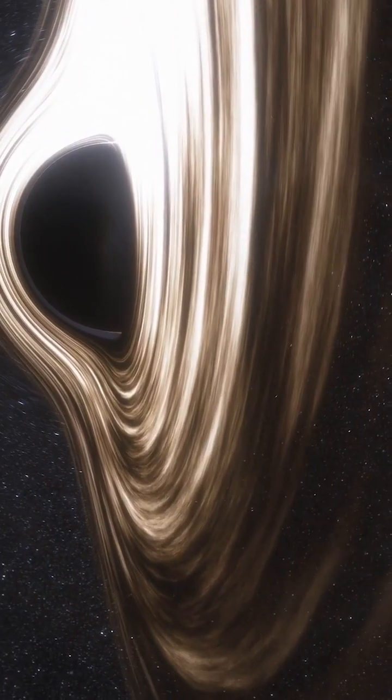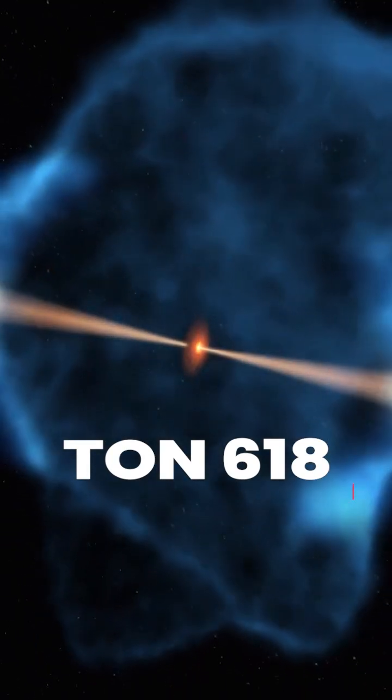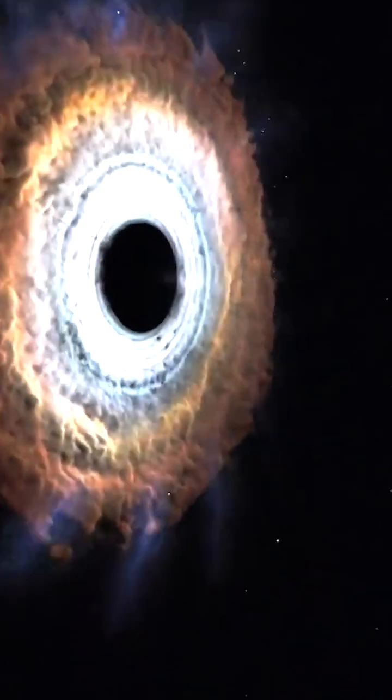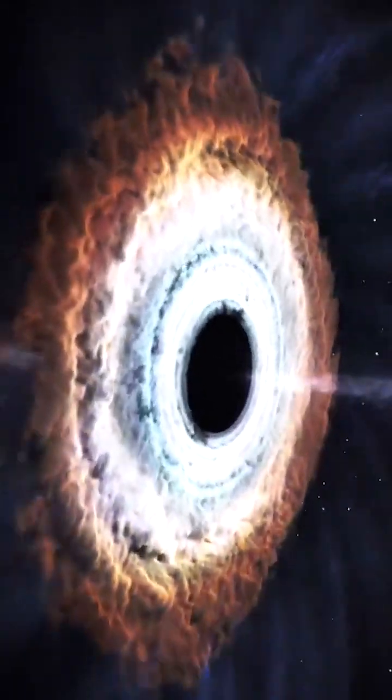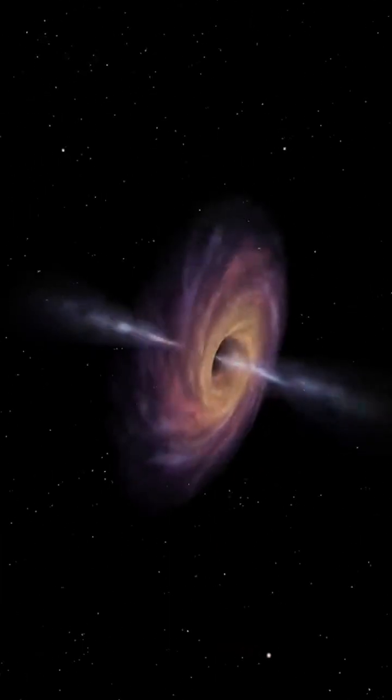And among the largest black holes discovered is Ton 618. Ton 618 is a supermassive black hole located approximately 10.4 billion light-years away in the constellation Canes Venatici. It's estimated to be around 66 billion times more massive than the Sun, making it one of the most massive black holes ever discovered.